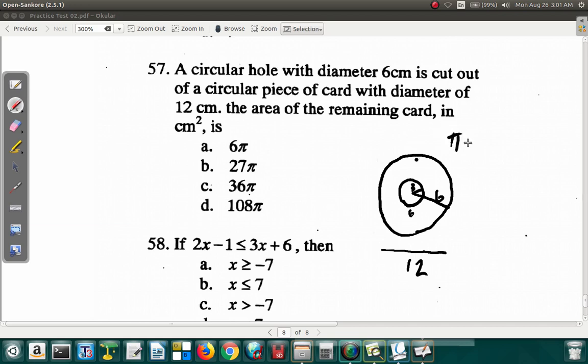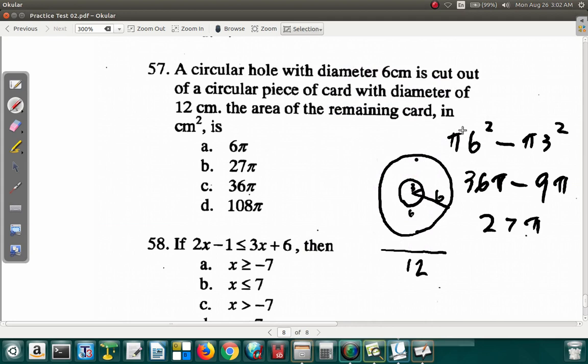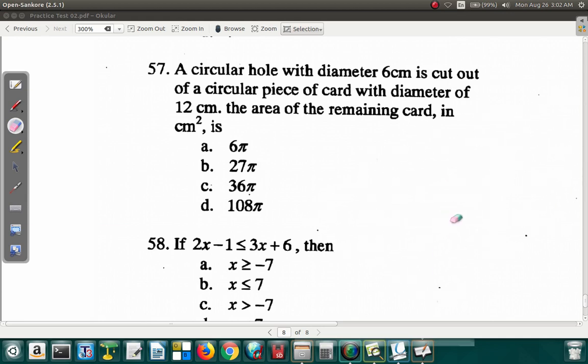Remember, the area is πr². So for everything it's π times 6², minus, then for the hole it's π times 3². 36π minus 9π. What is 36 minus 9? It's going to be 27. 27π. B, 57. It's saying B, so it is B. So you subtract both areas. Find both areas and subtract them, and you'll get the area of the remaining card.